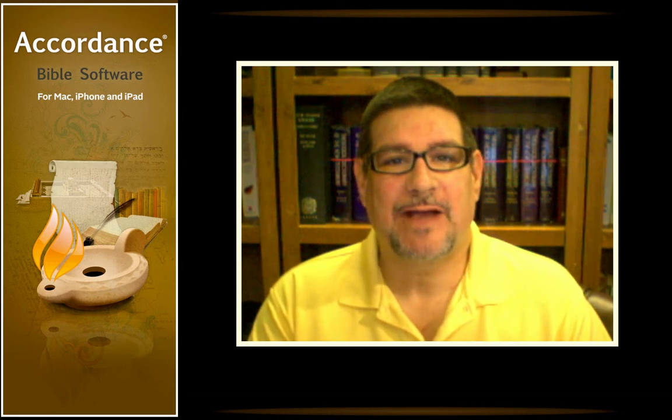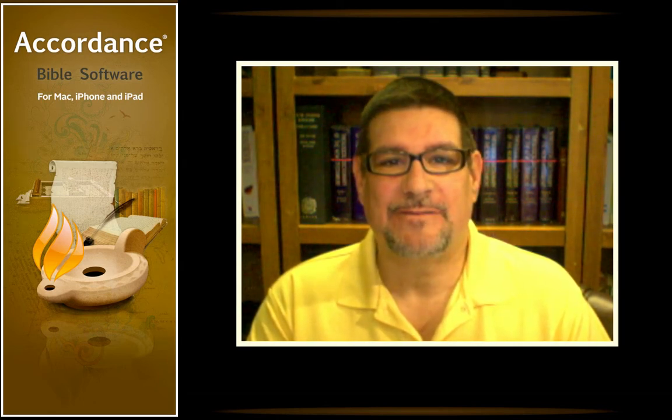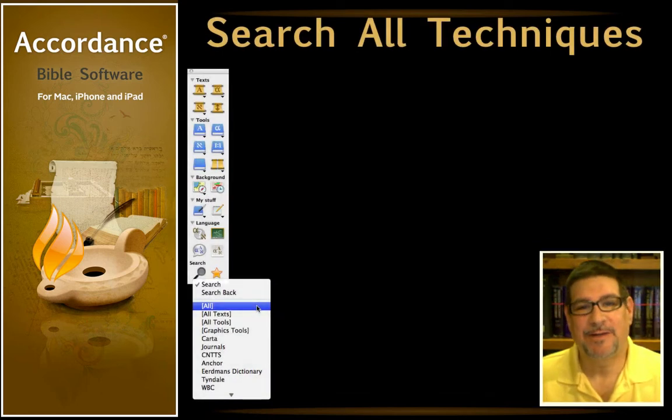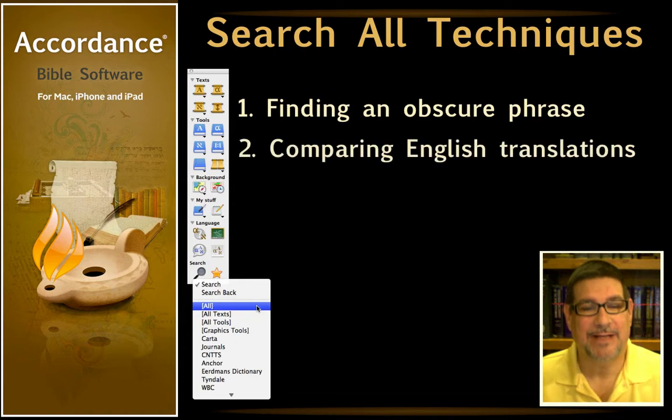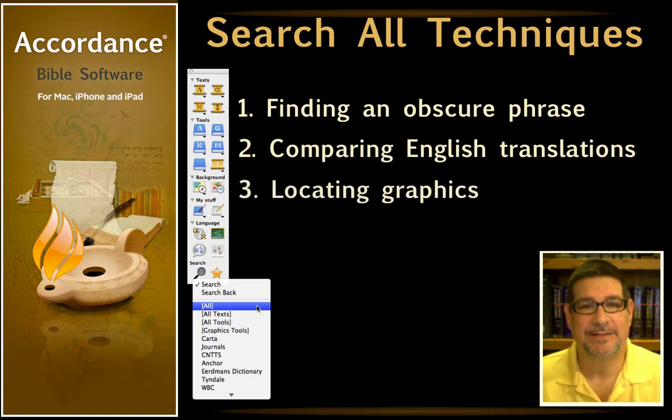We were only able to cover the basics and thought you might enjoy learning a few advanced techniques for this feature. Before you view this podcast, please view podcast number 41 and make sure you have Accordance 9.1.1 installed. Today, we'll look at three different search all techniques: Finding an Obscure Phrase, Comparing English Translations, and Locating Graphics.